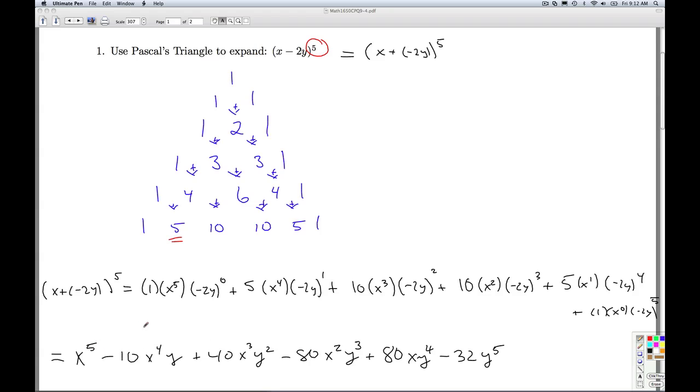So the exponents always add up to 5. The x's count down from 5, 4, 3, 2, 1, none. The y's count up from none, 1, 2, 3, 4, 5. Also remember that when you square, cube, or fourth power, when you take the negative 2y to the power, you're not only taking y to that power, but the negative 2 to that power. Okay? So those are the common mistakes people make. So it's always worth a quick check. That'll do it for number one.